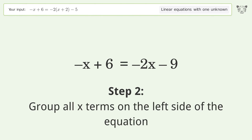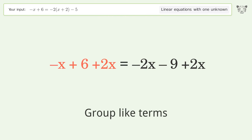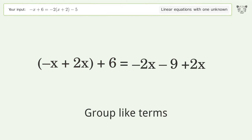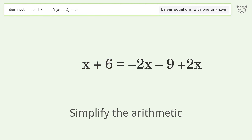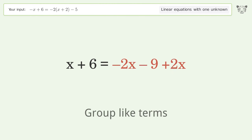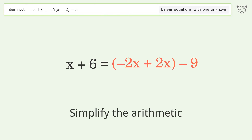Group all x terms on the left side of the equation — add 2x to both sides. Group like terms, then simplify the arithmetic. Group like terms again and simplify the arithmetic.